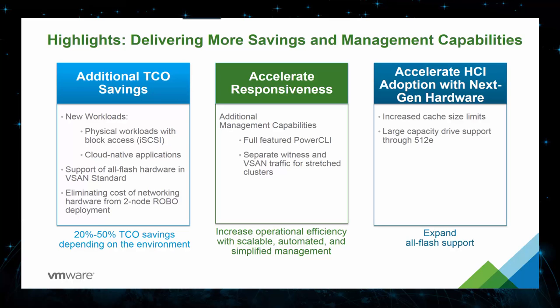With virtual SAN 6.5, we offer additional total cost of ownership or TCO savings by offering new workload types such as cloud-native apps and the ability for physical workloads to point to the vSAN data store via iSCSI communication. Support of all-flash hardware in the virtual SAN standard edition, while eliminating the cost of networking hardware for two-node robo deployments or remote office branch office deployments. We can accelerate responsiveness of the business by providing a full-featured Power CLI tool to fully automate daily operational tasks.